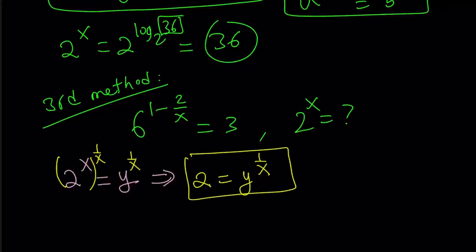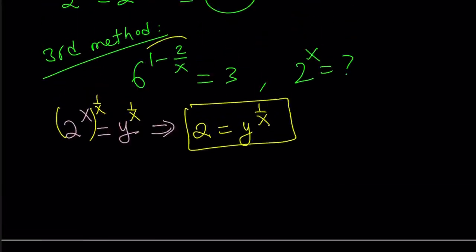But let's go ahead and work this out a little bit. So we're going to take this. 6 to the power 1 minus 2 over x. And I want to make a common denominator. 6 to the power x minus 2 over x. Great.